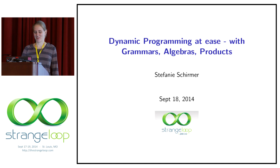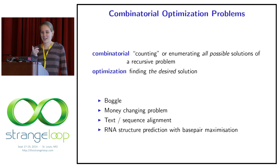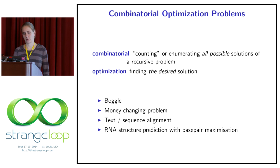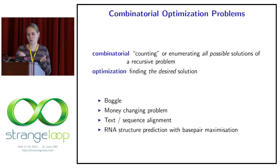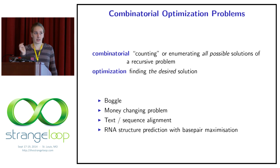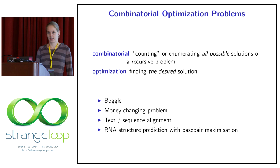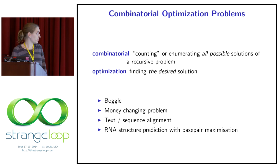Dynamic programming at ease with Grammar's Algebra's products. I'm very happy to be here and talk about dynamic programming today. Why do we want to do dynamic programming? We want to do this to solve combinatorial optimization problems. These problems have a combinatorial part — we have some counting to do, we have to enumerate all possible solutions of a recursive kind of problem. And then we have the optimization part, so we have to find the desired solution — whatever desired means for us — it could be that we want the maximum of some score or something like that.